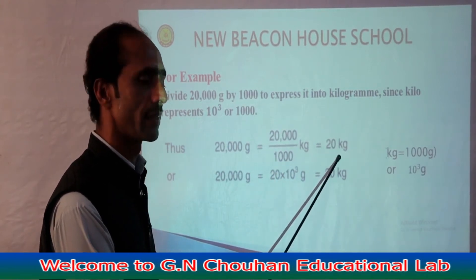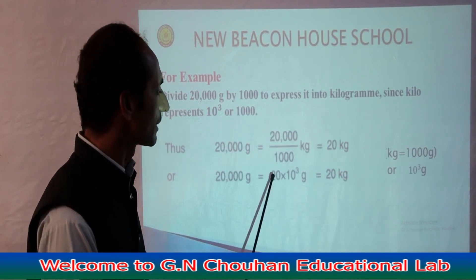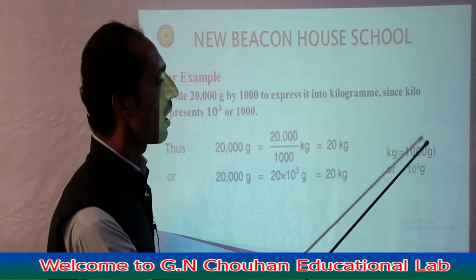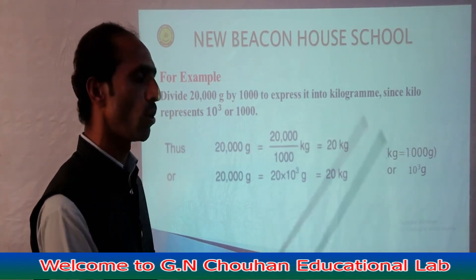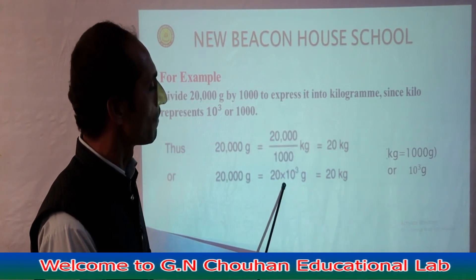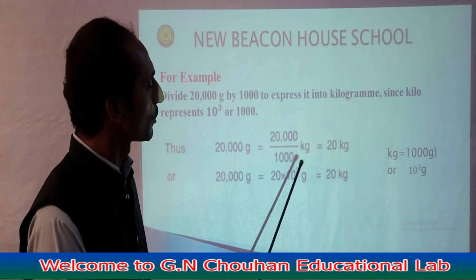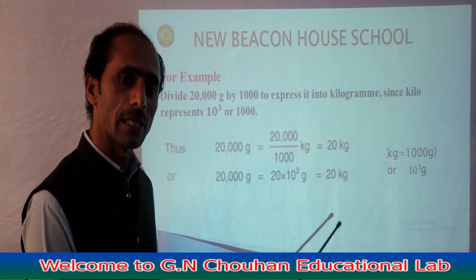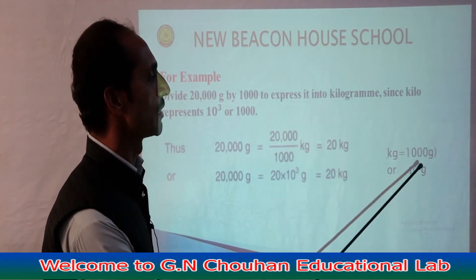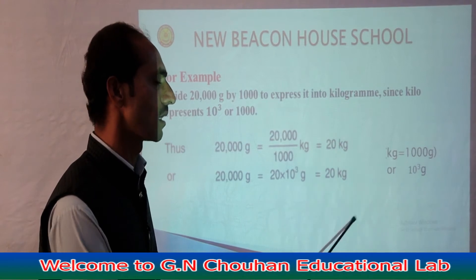After cancellation, the answer is 20 kilograms. Similarly, twenty thousand grams — we separate the twenty and the thousand; since one kilogram equals one thousand grams, which equals 10 raised to the power 3 grams, we can write: 20 × 10^3 grams. Since 10^3 equals kilo, when we remove 10^3, 'kilo' is written in its place — so the answer becomes 20 kilograms.